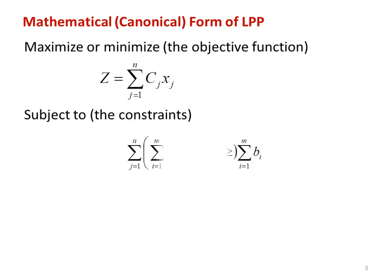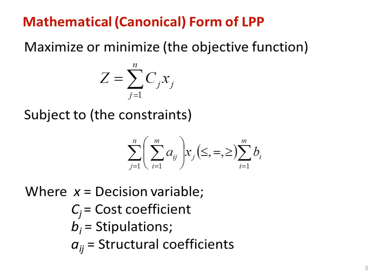So the mathematical form of the linear programming problem. It may be maximization or minimization of the objective function z = Σ(j=1 to n) cj·xj, where cj is the cost coefficient and xj is the decision variable. Subject to the constraints Σ(i=1 to m) aij·xij ≤, =, or ≥ Σ(i=1 to m) bi, where cj is the cost coefficient, bj is the stipulations, and aij is the structural coefficient. This is the mathematical form of the linear programming problem.